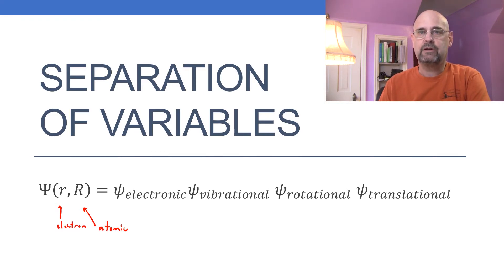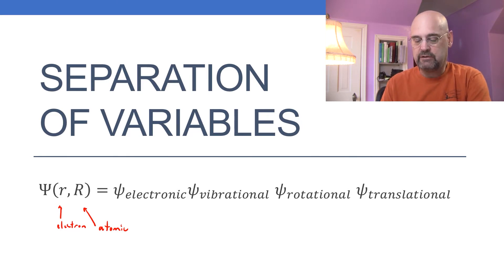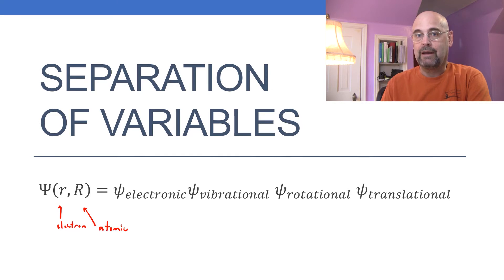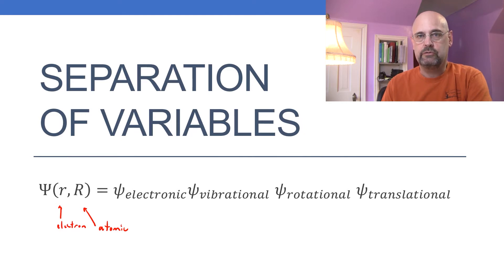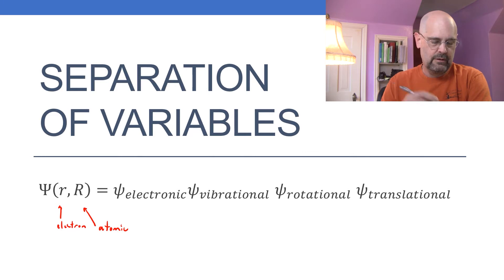The electronic wave function is the wave function of the electrons, and then vibration and rotation have to do with the positions of the atoms themselves working in a potential which is derived from that electronic wave function. Translation is the particle in a box that we've looked at previously. These are the approximations we're going to go through in order to break this wave function up into these four pieces.